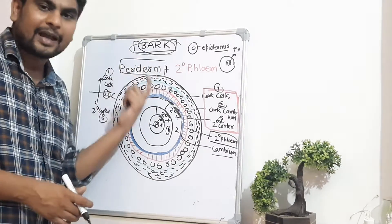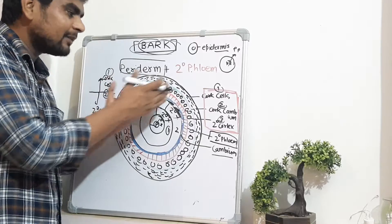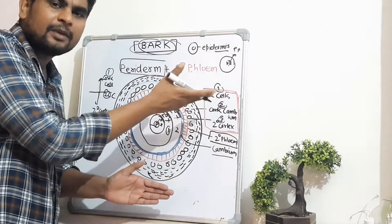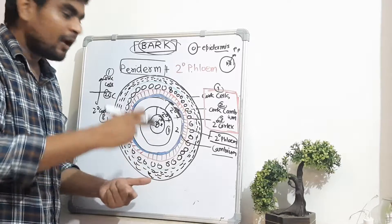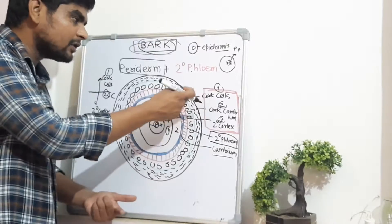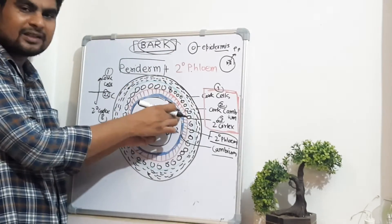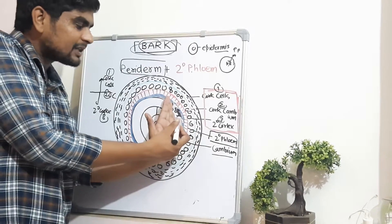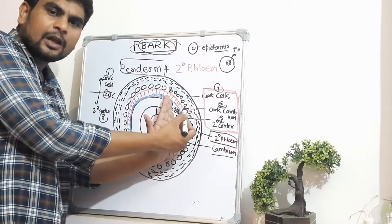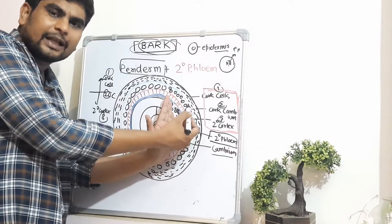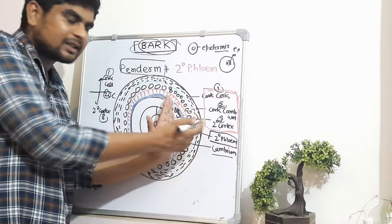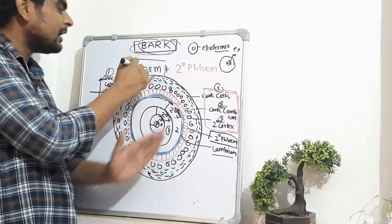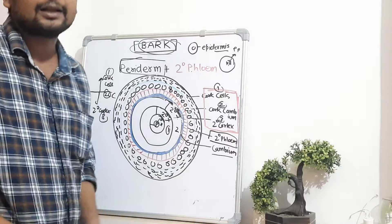The difference between periderm and bark: the periderm includes three layers — cork cells, cork cambium, and secondary cortex. Bark is broader — it includes the secondary phloem plus the periderm together. So: secondary phloem plus periderm collectively equals bark.